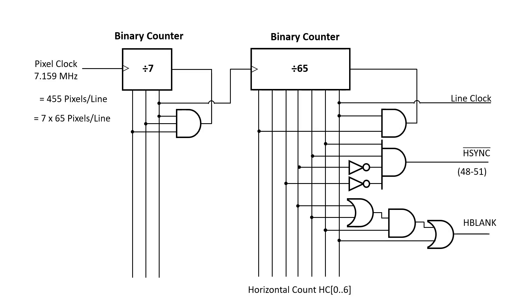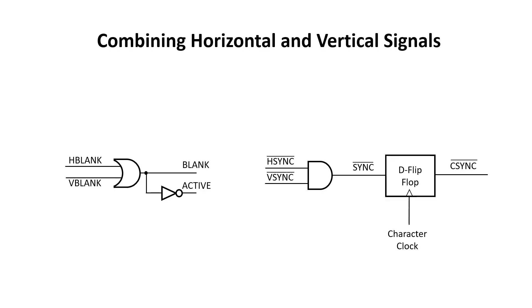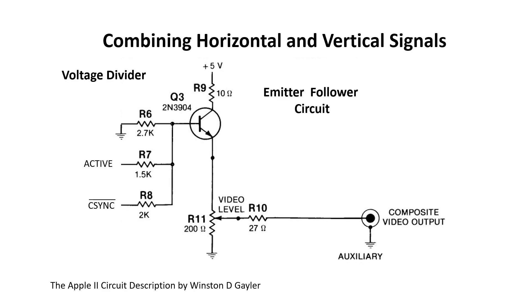In the previous two videos, we built a simple raster generator. This circuit produces the horizontal count, the horizontal sync, and the horizontal blank signals. Similarly, this circuit generated the vertical count, the vertical sync, and the vertical blank signals. We used this circuit to combine the vertical and horizontal signals, then generated a composite output. The raster generator was able to generate the sync signals and display a white box for the active area.